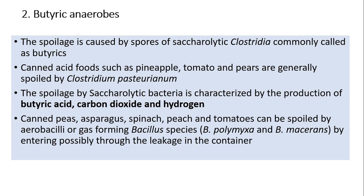Butyric anaerobes: spoilage is caused by spores of saccharolytic clostridia, commonly called butyrics. Canned acid foods such as pineapple, tomato, and pears are generally spoiled by Clostridium pasteurianum. The spoilage by saccharolytic bacteria is characterized by the production of butyric acid, carbon dioxide, and hydrogen. Canned peas, asparagus, spinach, peach, and tomatoes can also be spoiled by gas-forming Bacillus species such as Bacillus polymyxa and Bacillus macerans.